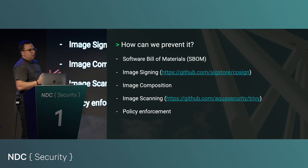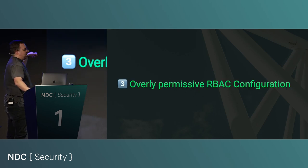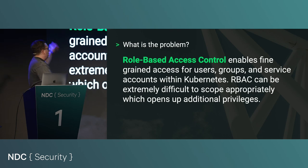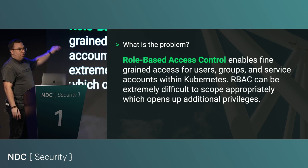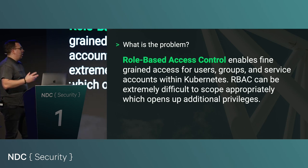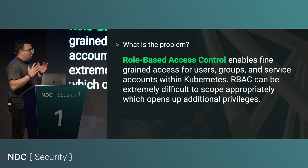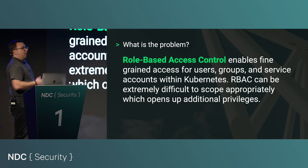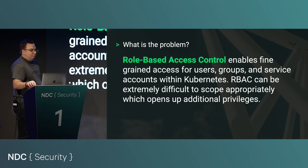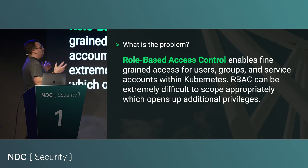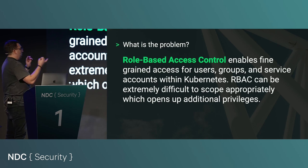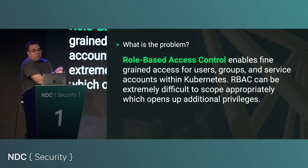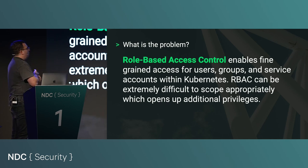Number three: overly permissive RBAC configuration. RBAC is a way to create fine-grained access to your Kubernetes cluster — allow Steve access to the development namespace, someone else to production. However, the RBAC ecosystem is vast and it becomes extremely difficult to work out who has access to what, who needs access to what, and what access a component currently running in your cluster actually needs.